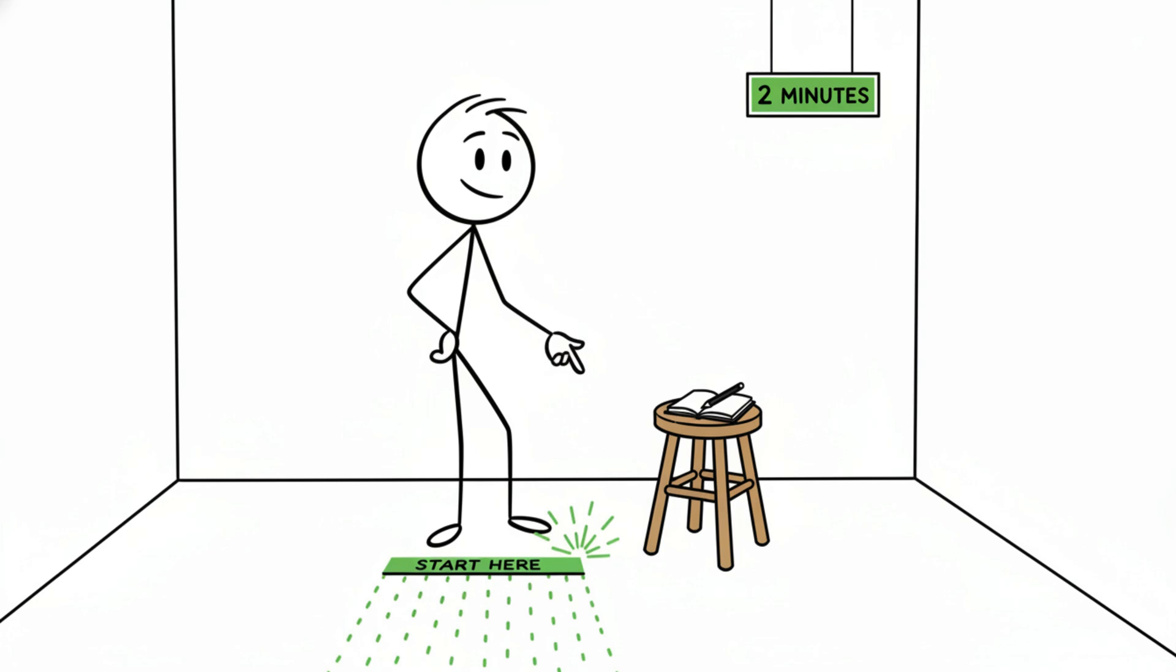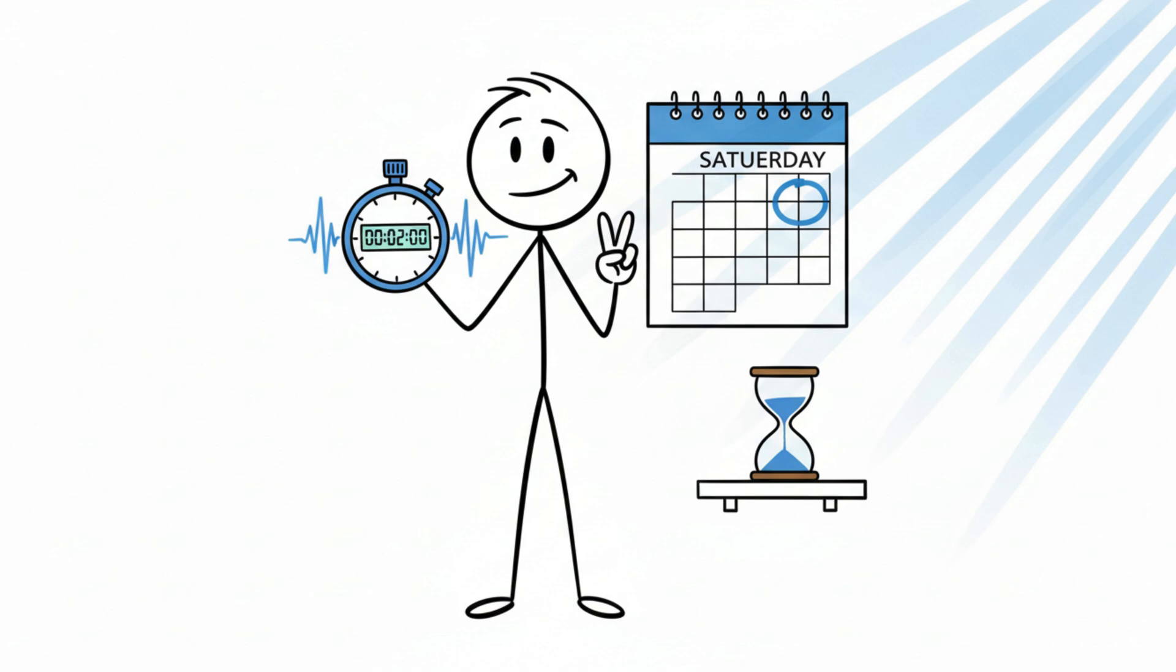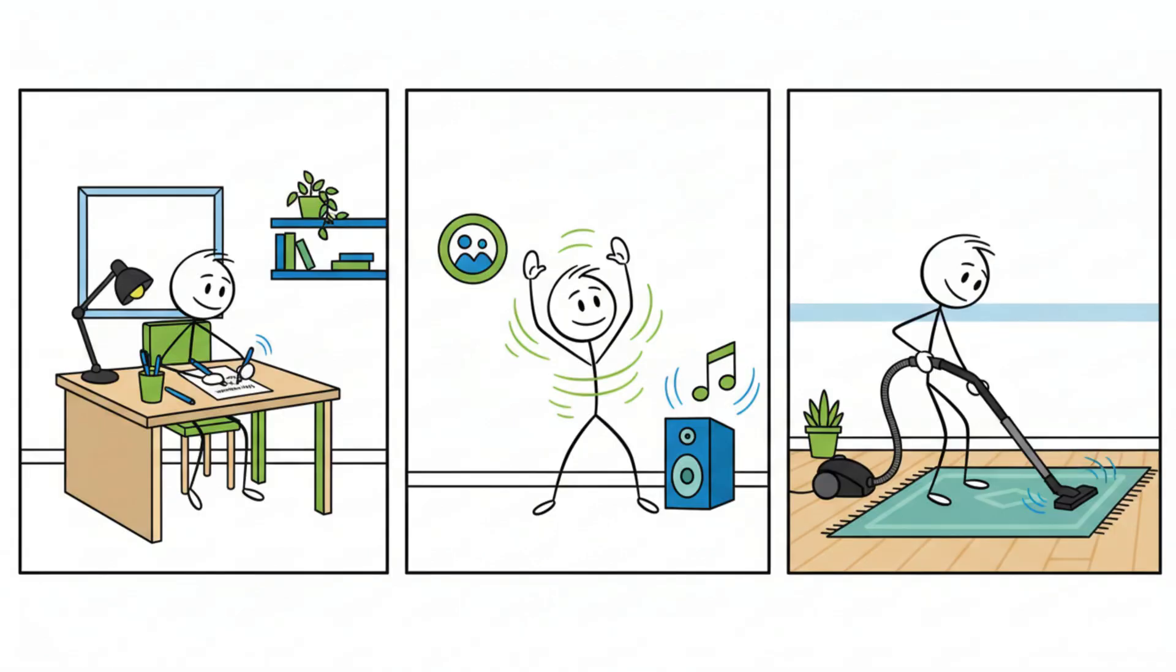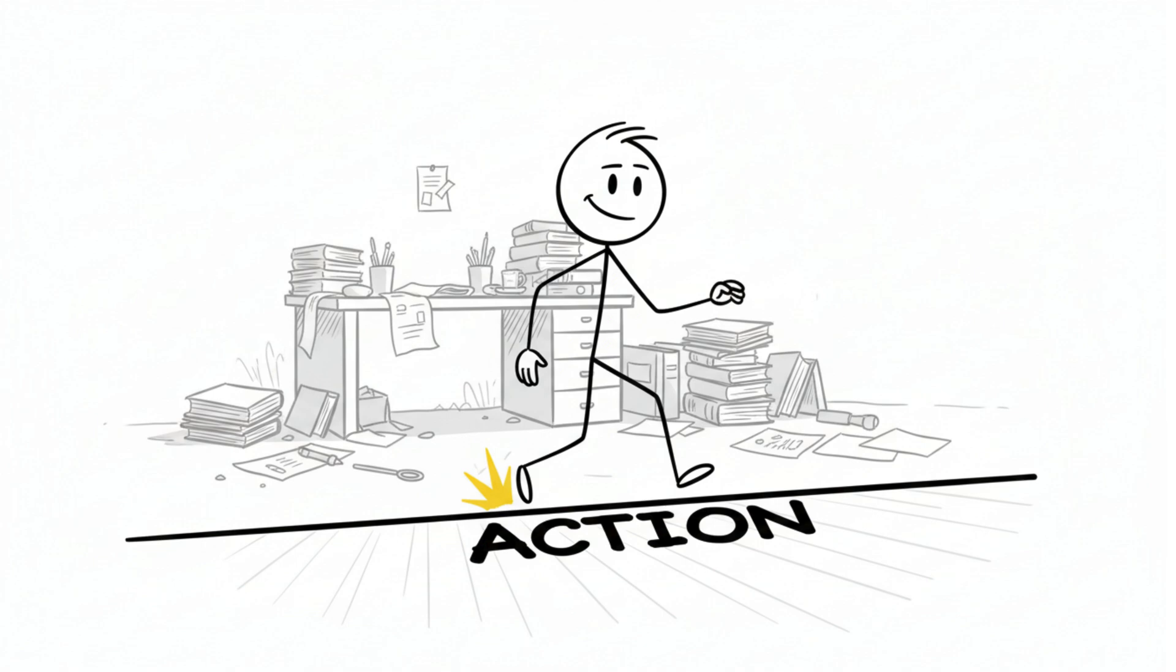The fix to this is super simple. Lower the entry cost. Tell yourself you'll just do it for two minutes. You can write one sentence, stretch for one song, vacuum one room.